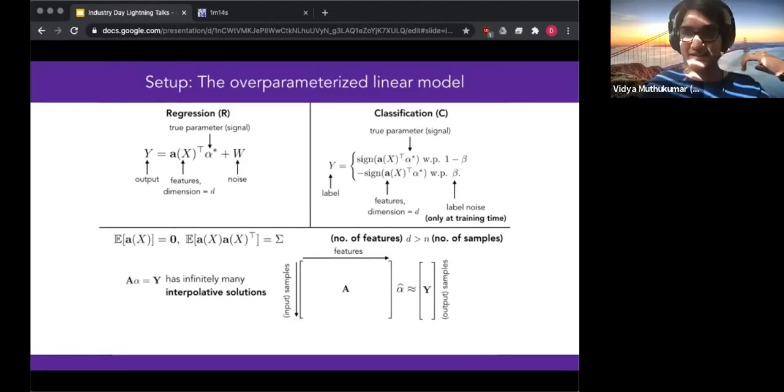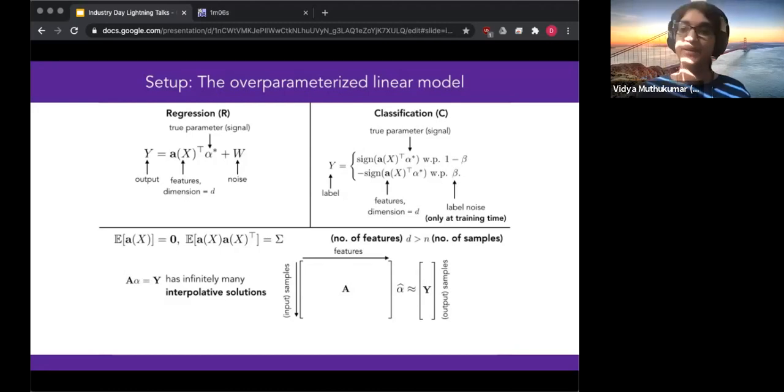And in this over-parameterized setting, in general, we can consider the setup of linear equations from input to output. And because the setting is linear, we actually have infinitely many interpolated solutions here. That is, we can satisfy this with equality. And we're going to be interested, in particular, in studying the minimum two-norm interpolation.